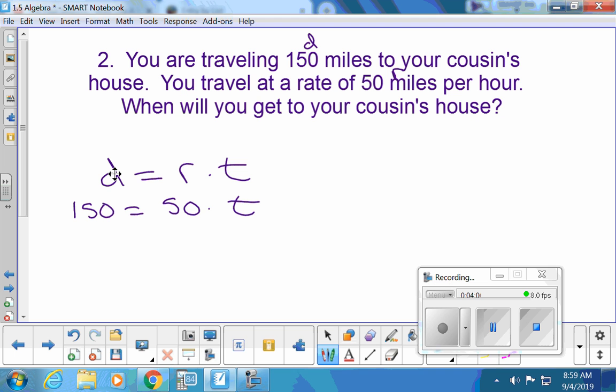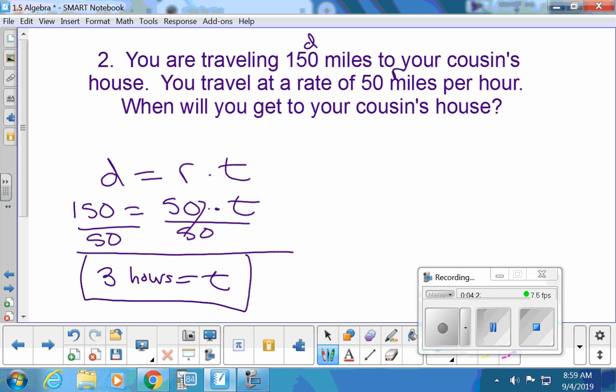Now we technically haven't solved equations like this yet, but I bet you can figure it out. Caspian? Could you do 150 divided by 50? Yeah. So I don't know if you did this last year. We haven't done it in this class. Just moving numbers to the other side. If they're multiplying, you can divide it over. But it's going to be 3 hours. So it'll take us 3 hours to drive to the cousin's house.